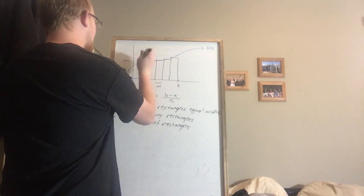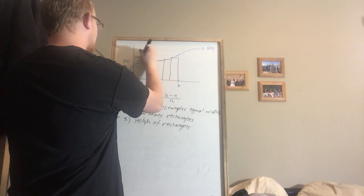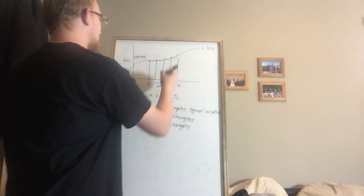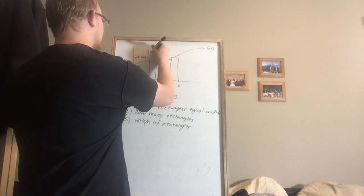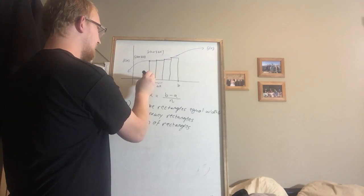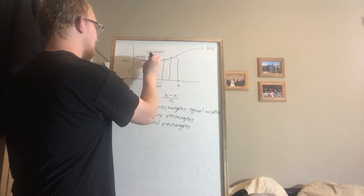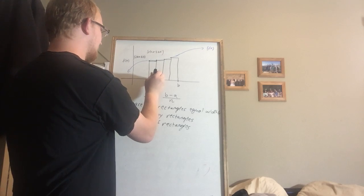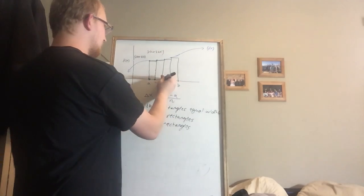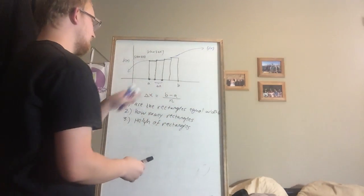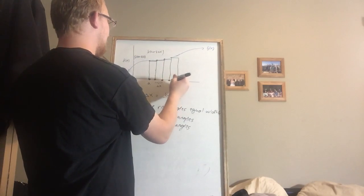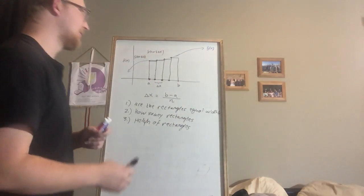The height of my second rectangle is f of a plus delta x, because f of a plus delta x gets me to the left point of that rectangle. The next one is going to be f of a plus 2 delta x. So I'm going to my left point for x and figuring out my y output — that's the height of the rectangle. I plug in a plus 2 delta x to get my third rectangle's height, and f of a plus 3 delta x to get the height of my fourth rectangle.